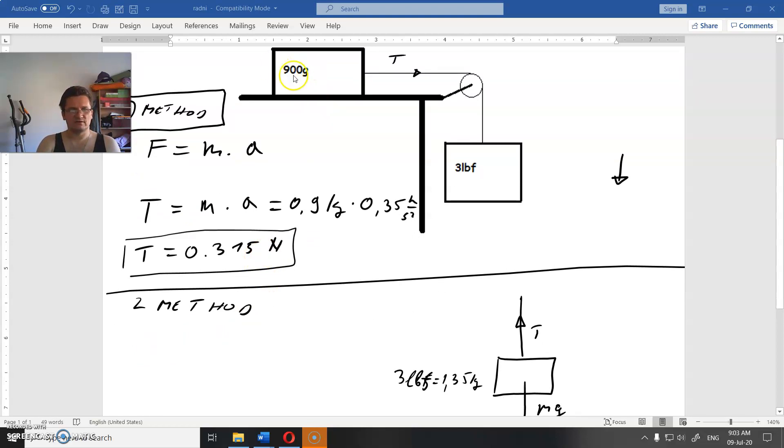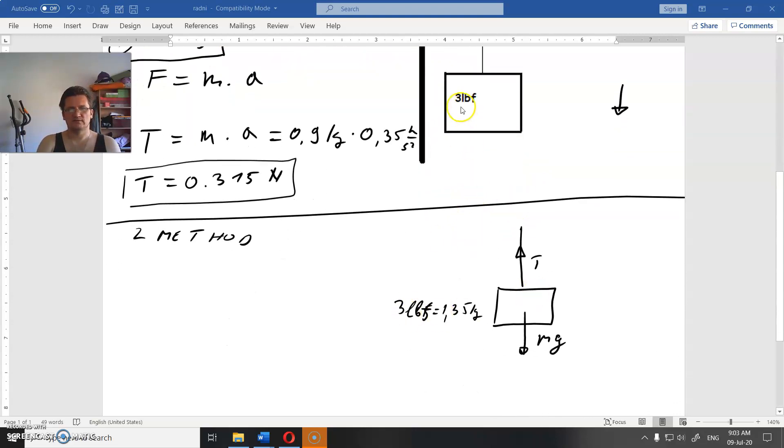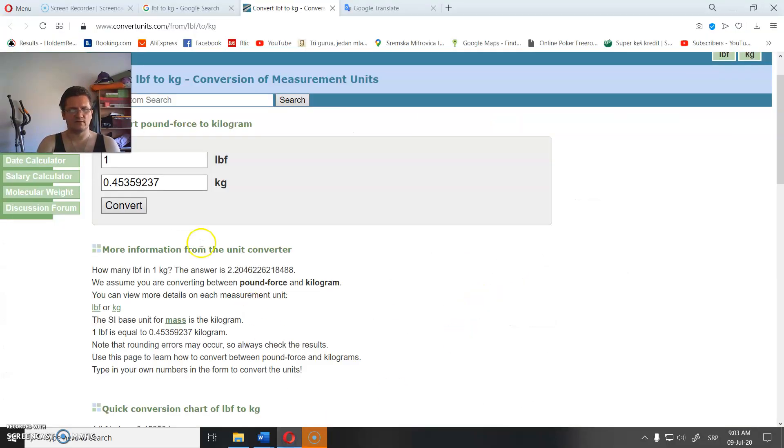For the first method, we just observe this one, and this is easier. For the second, we observe what's happening with this weight here. This 3 LBF is actually 1.35 kilograms according to this.